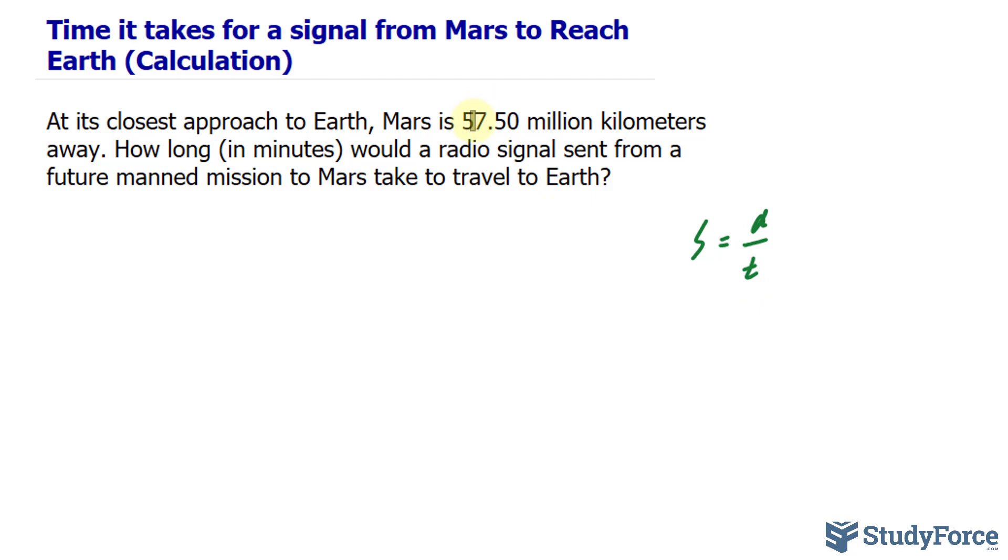The distance has been given to us already, at 57.50 million kilometers away. And the speed of light is a known constant. I'll represent it by the letter S. It happens to be 3.0 times 10 to the power of 8 meters per second.